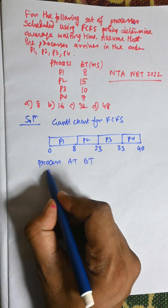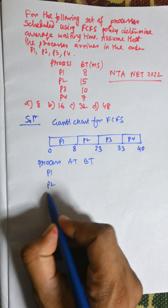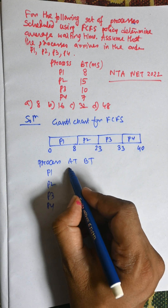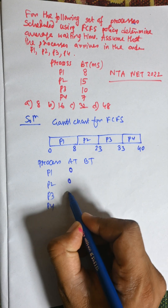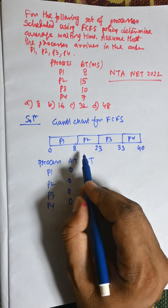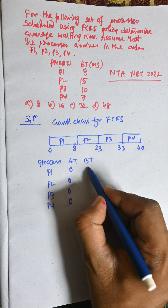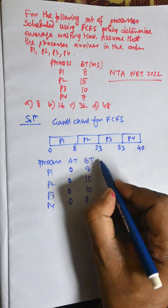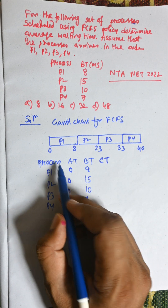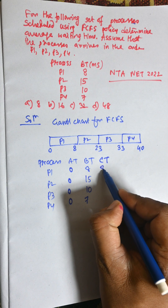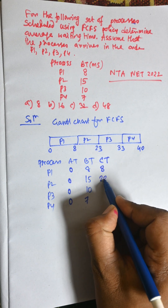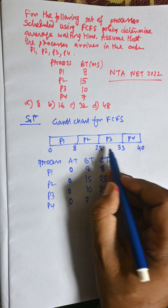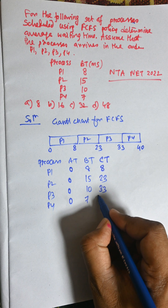Now we calculate the waiting time. Processes are P1, P2, P3, P4. Arrival time is 0 for all. Burst times are 8, 15, 10, and 7. Completion time: P1 is 8, P2 is 23, P3 is 33, and P4 is 40.